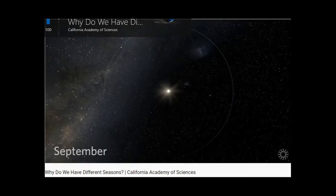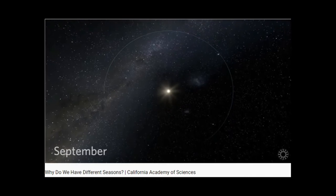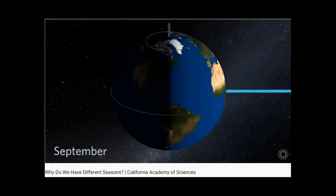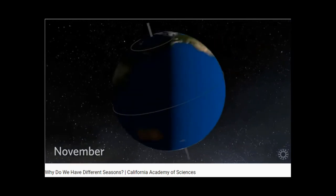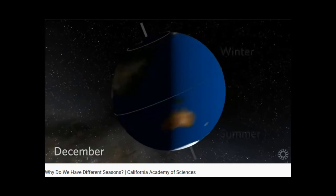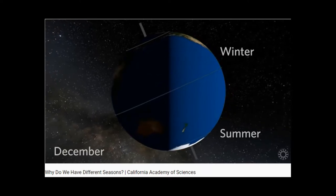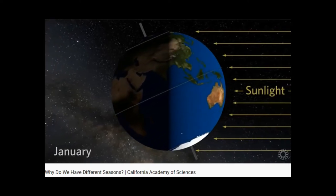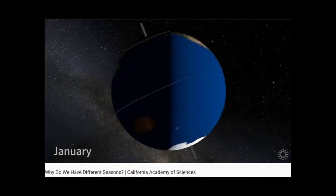Earth orbits the sun, and it takes a full year for our planet to complete its orbit. Earth also rotates like a slightly tilted spinning top, remaining tilted in the same direction all year round as we orbit the sun. This means the sun's light shines differently on earth at different times of year. When it's winter in the northern hemisphere, the north pole tips away from the sun, and sunlight strikes at a shallow angle for a short period of time.